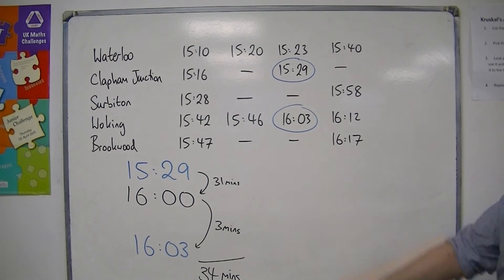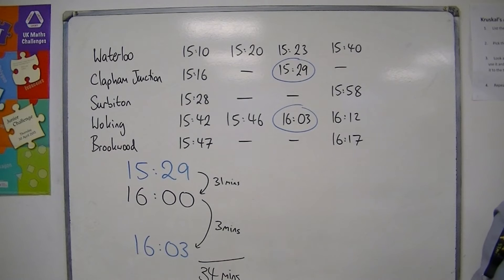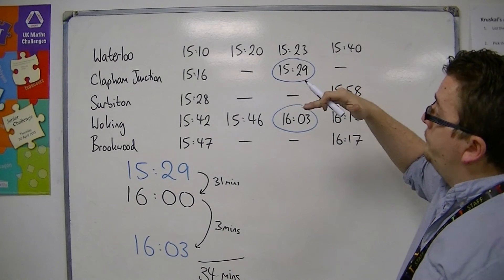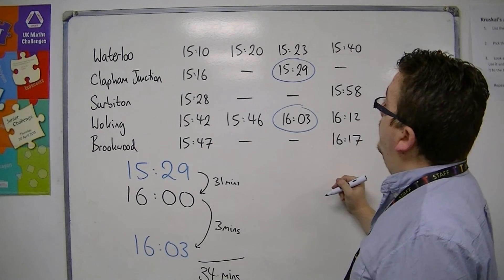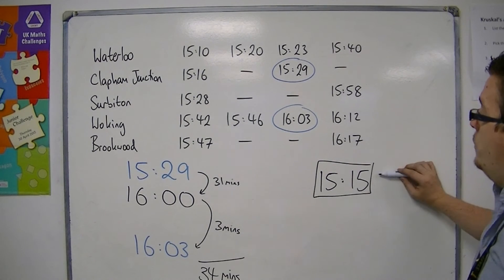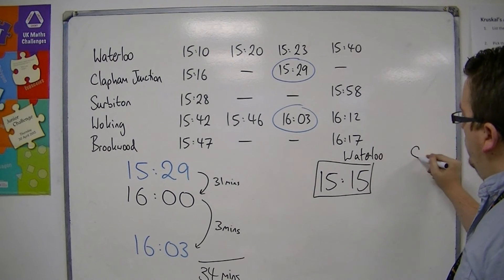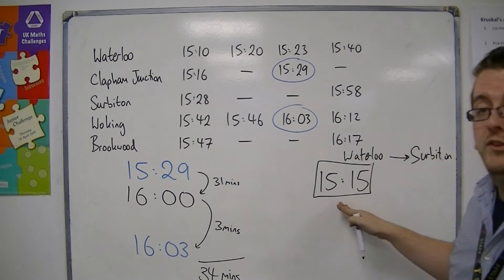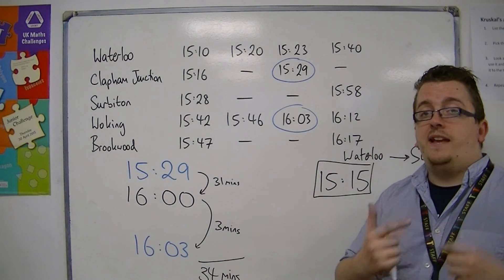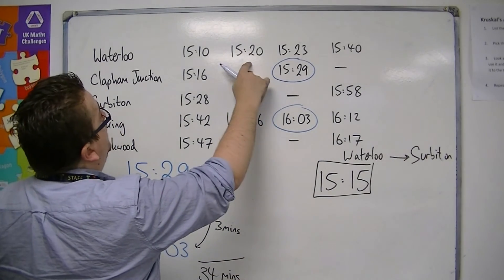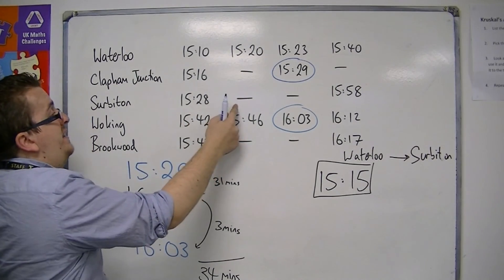So the actual trip on the train would be 34 minutes from Waterloo to Woking. Now let's say someone wants to catch a train and they get into Waterloo at 3:15. They want to get to Surbiton. So they want to go from Waterloo to Surbiton, arriving at Waterloo station at quarter past 3. At what time are they going to catch the next train to Surbiton? The next train from Waterloo leaves at 3:20, but the 3:20 doesn't go to Surbiton.